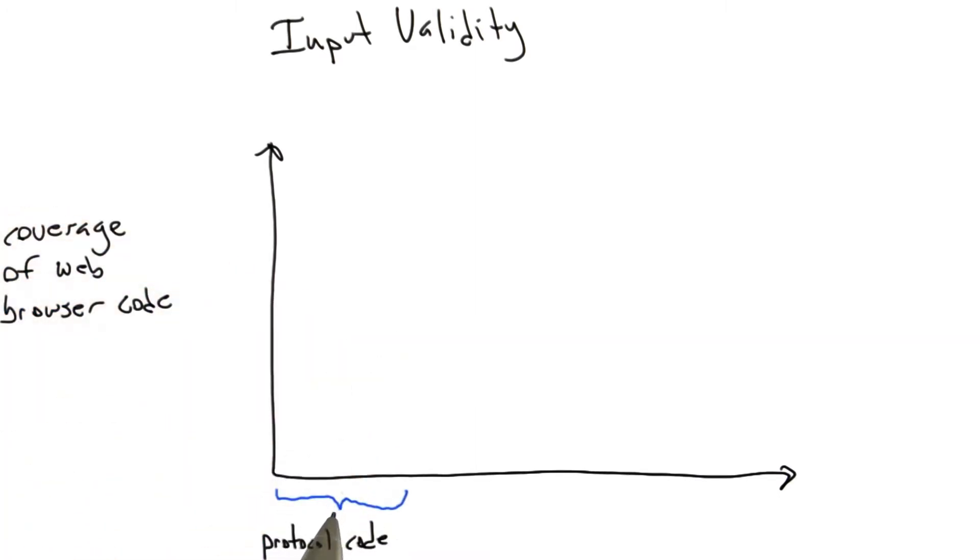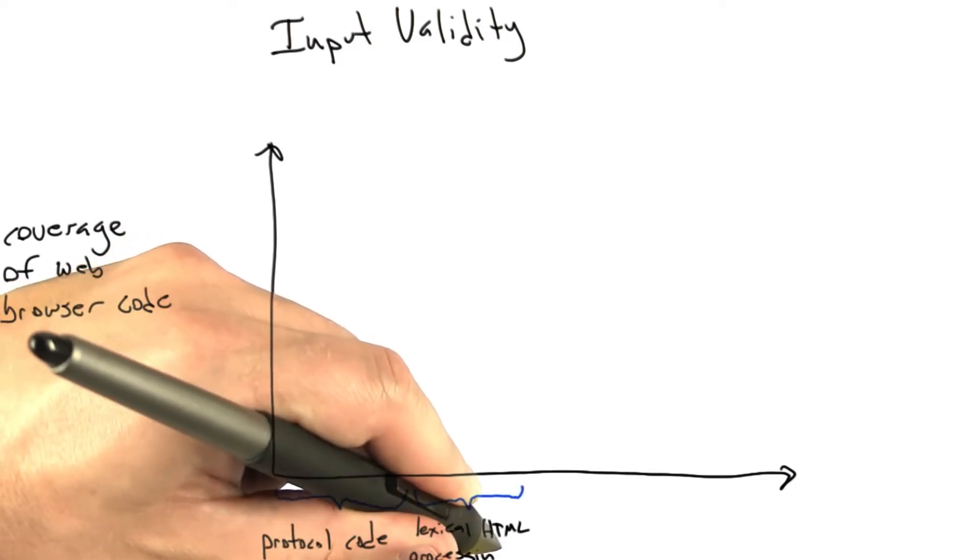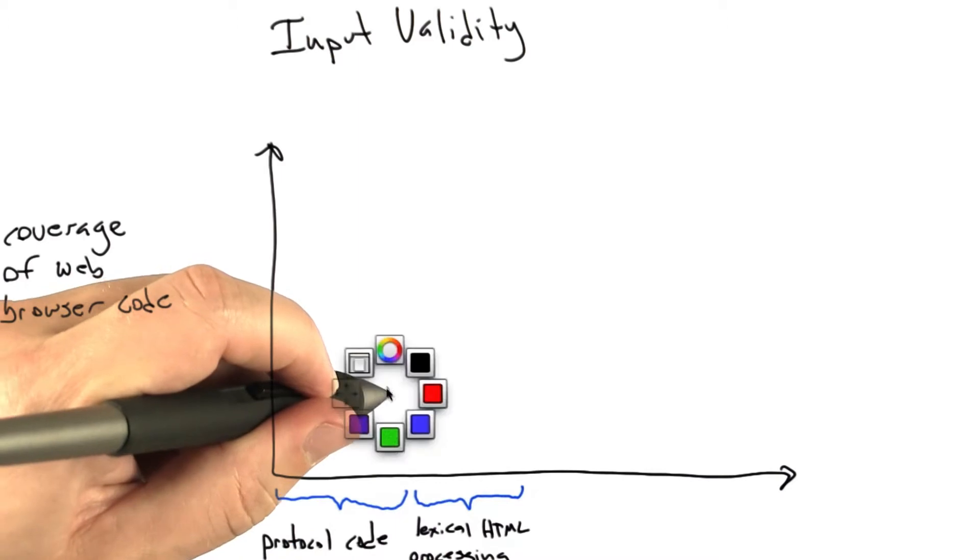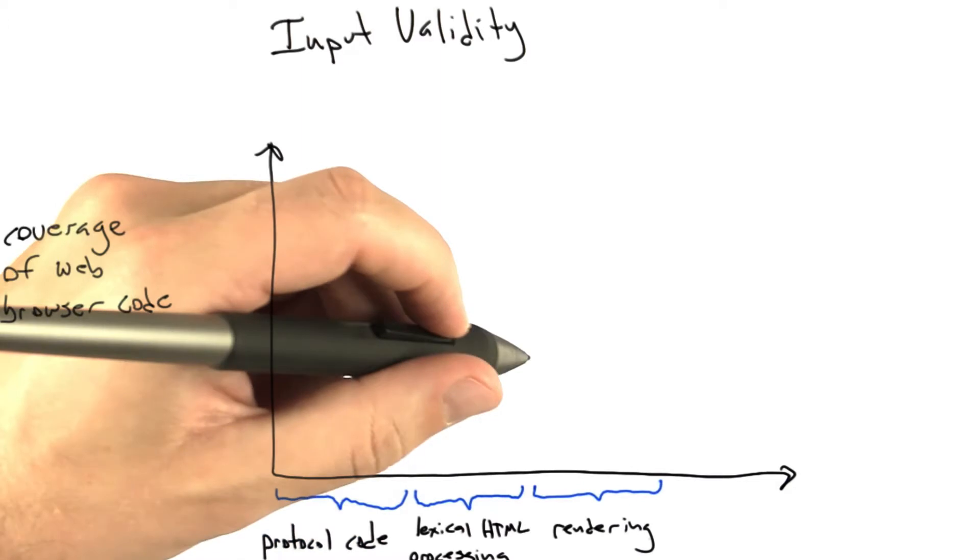if the incoming data is even valid HTTP. Once we get valid HTTP, the browser is going to scan and make sure it got valid HTML. It's going to be doing lexical analysis and checking of HTML. If the input fails to be rejected by this kind of code,